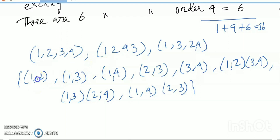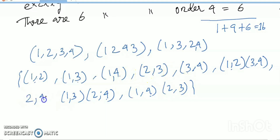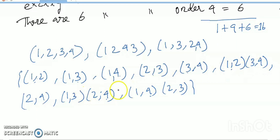The order-2 elements are: (1,2), (1,3), (1,4), (1,2,3) — wait, also (2,4) is missing, so (2,4), (3,4), (1,2)(3,4), (1,3)(2,4), and (1,4)(2,3). These are all 9 elements of order 2 in S4.